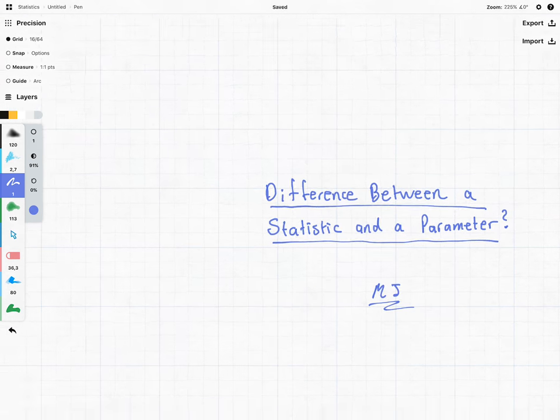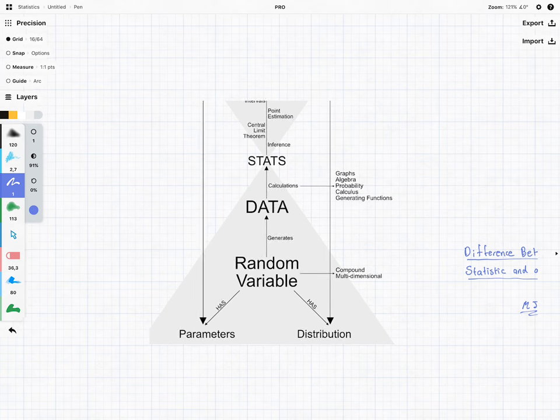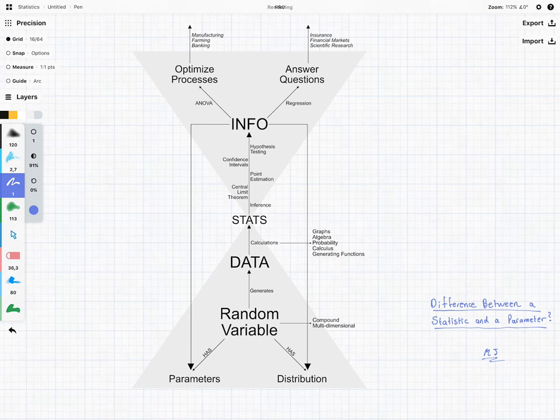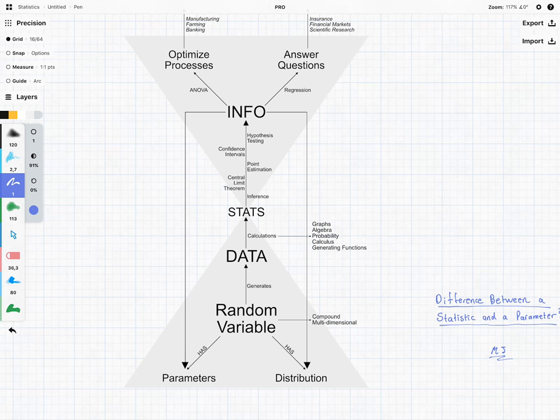This is a very easy question to answer if we look at the big picture of statistics. We can see this is where our statistic is and this is where our parameter is, so they are different things.